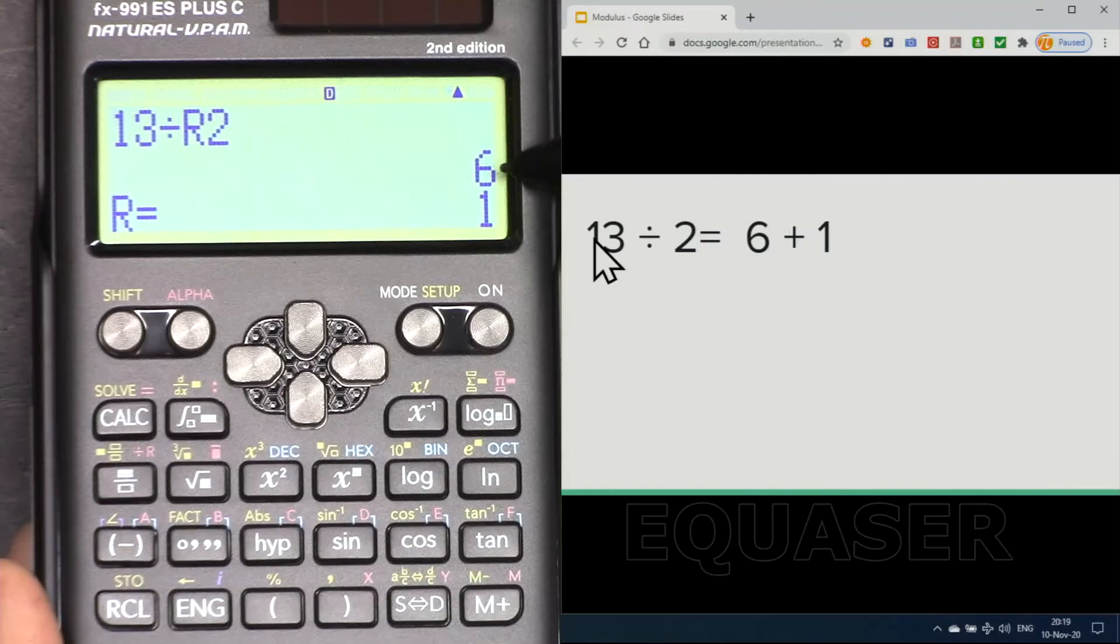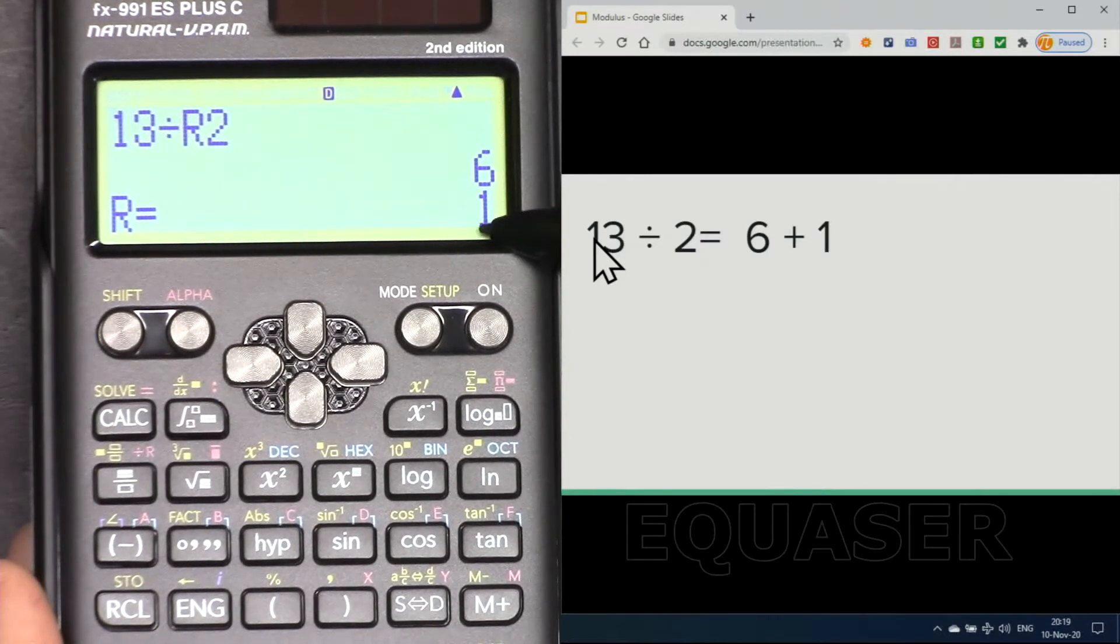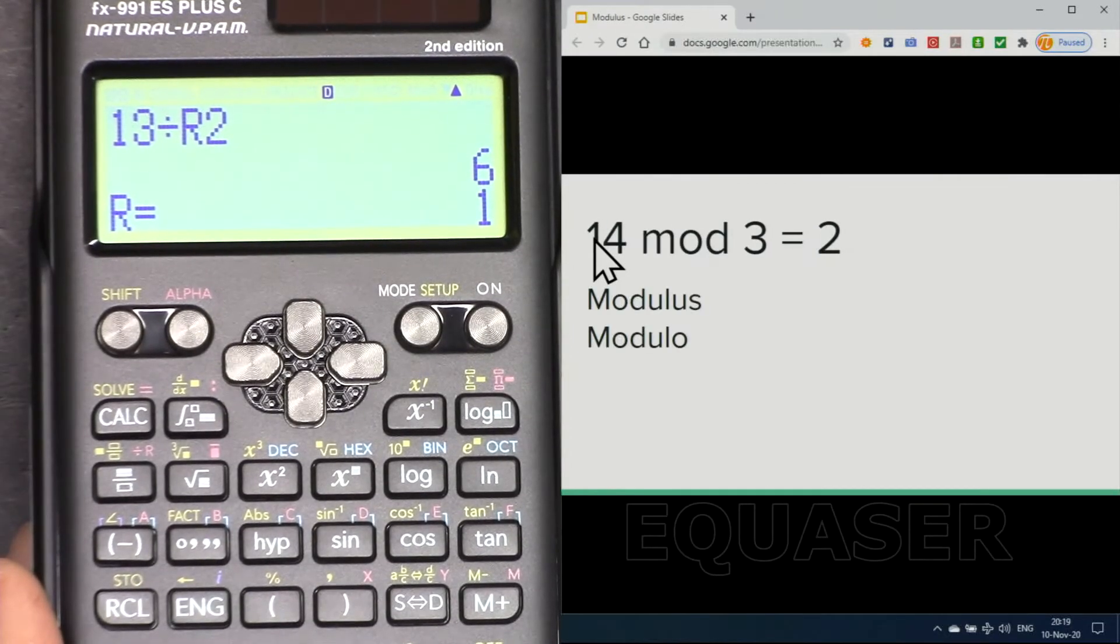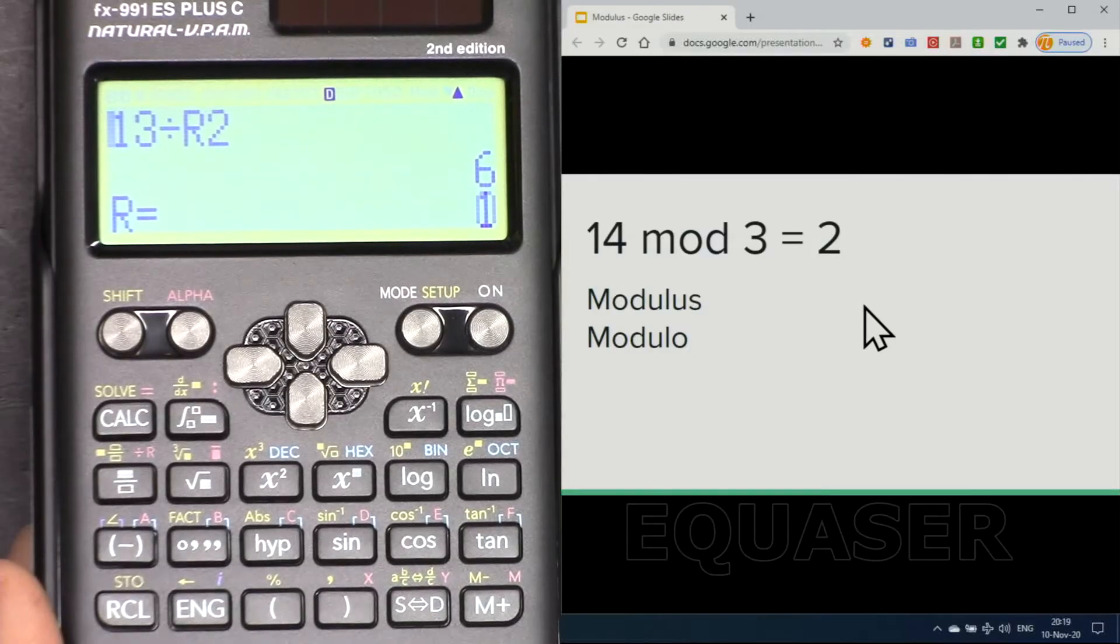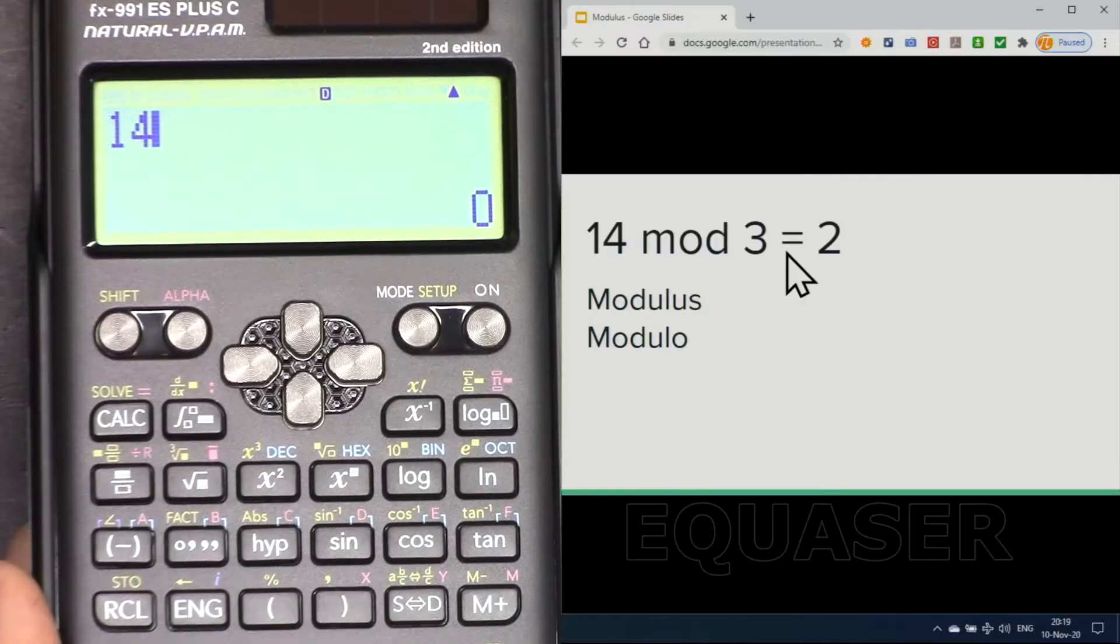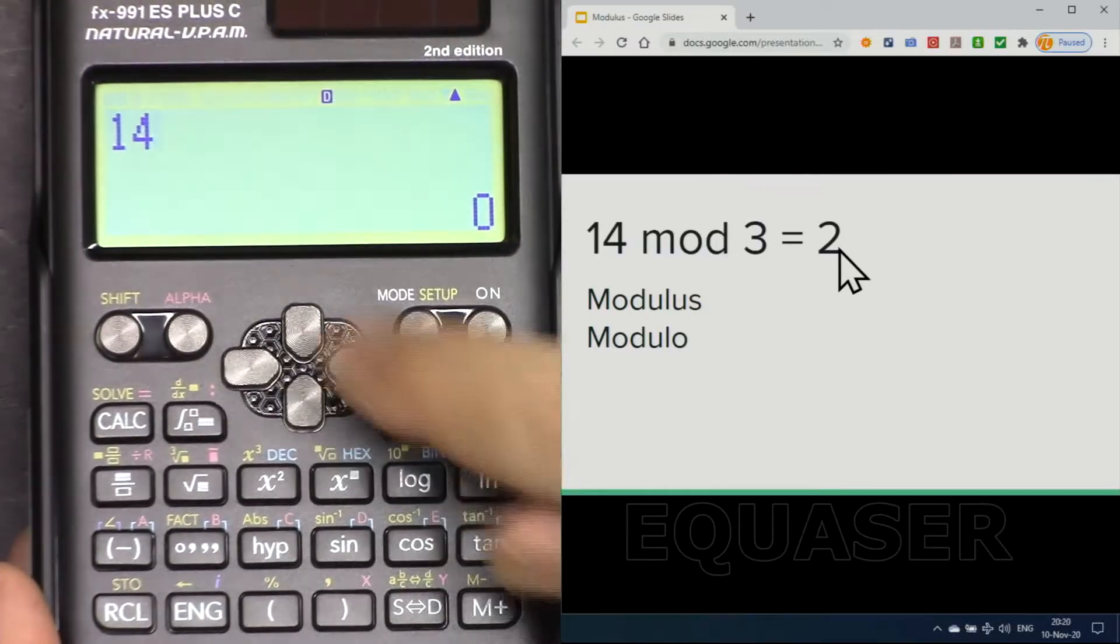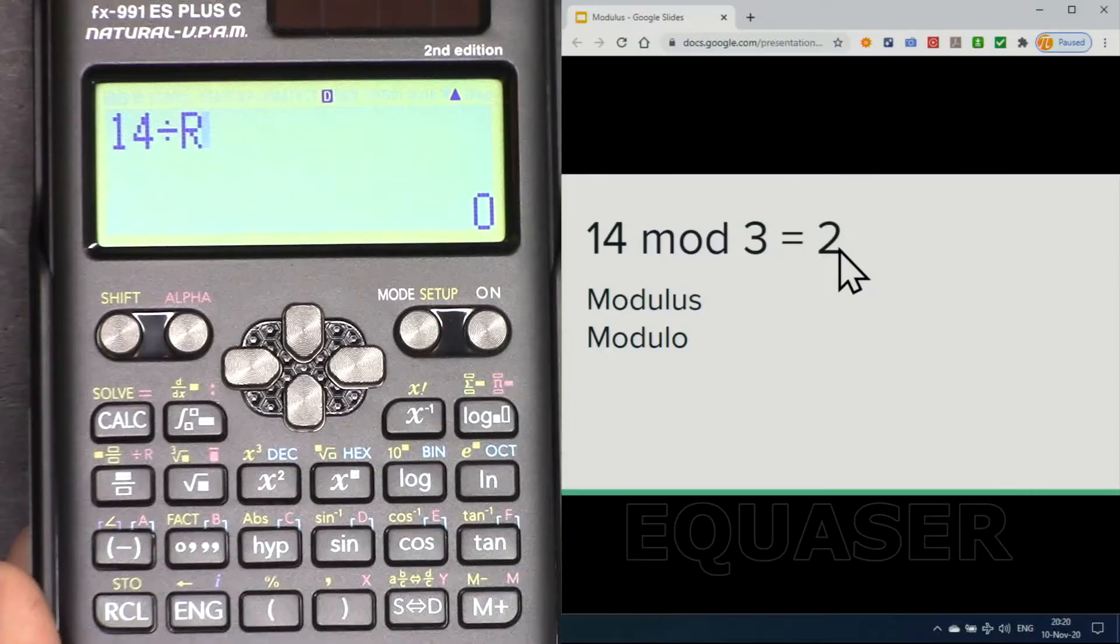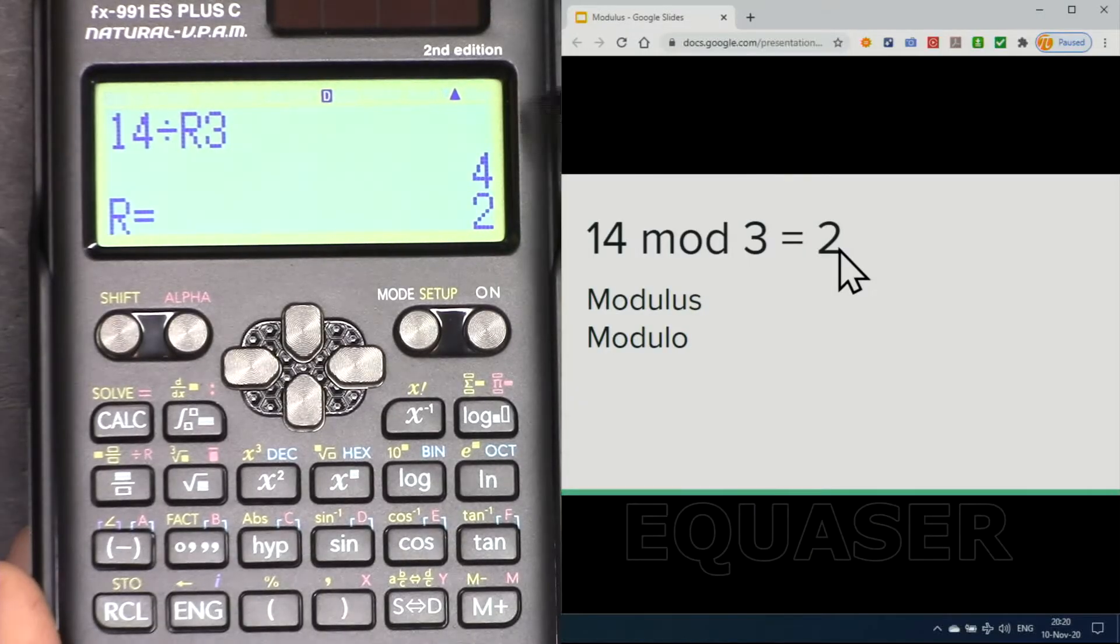And then let's say you have 14, they say 14 mod 3, the answer is 2. Let's see how we can do it here, mod 3, and the answer is 2.